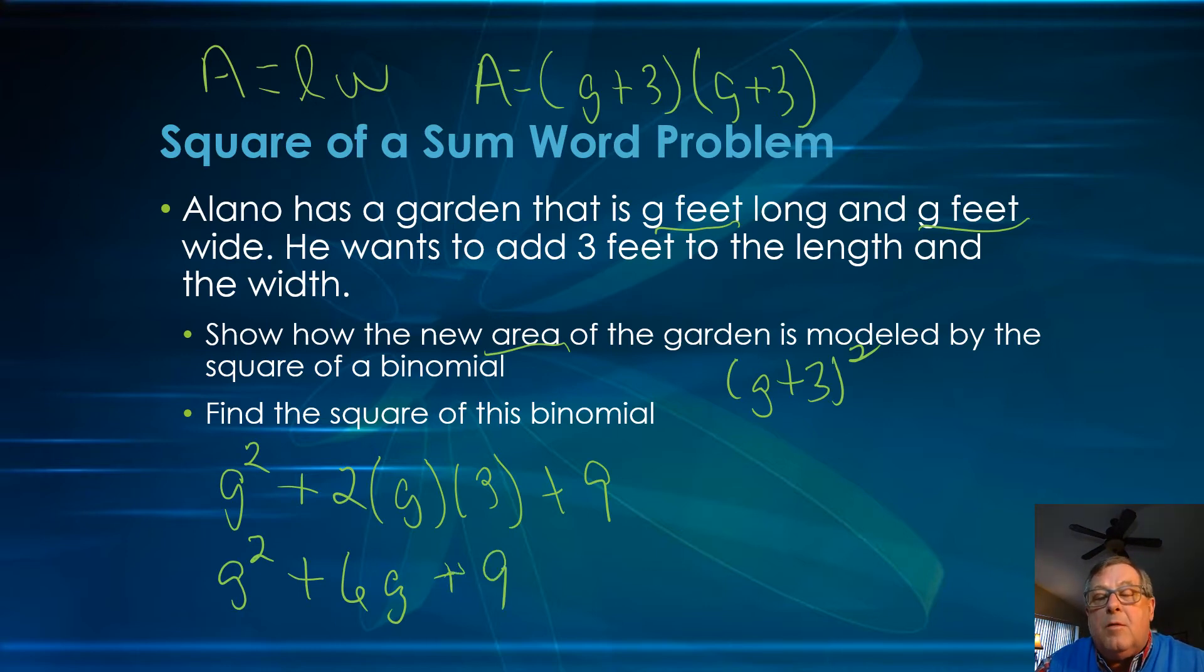Recognizing the pattern that we've got the square of a sum in a binomial, we do a little shortcut method, maybe rather than using FOIL. But again, I'm going to stress, FOIL will always work, whether you recognize the pattern or not. But there's a square of a sum word problem.